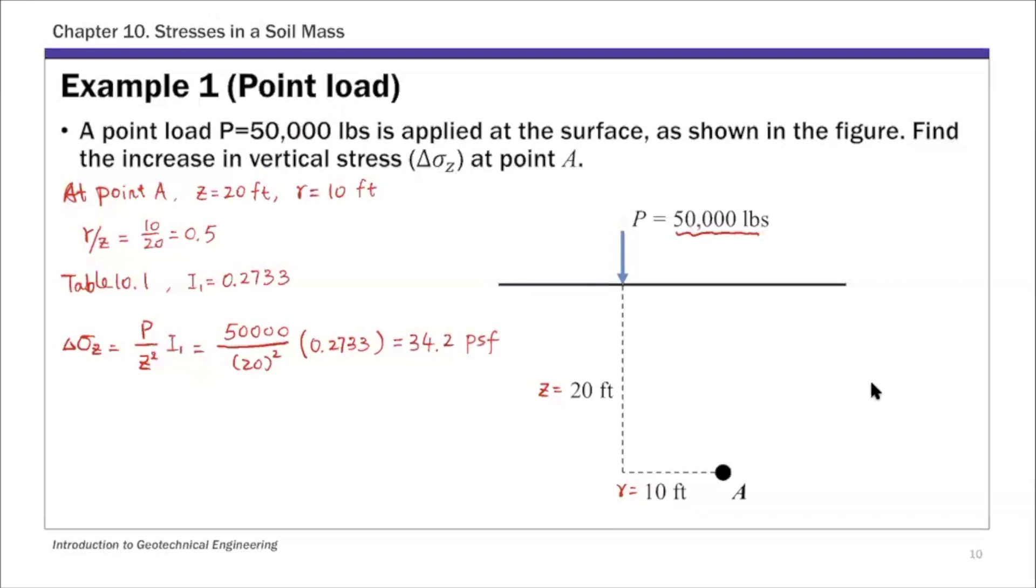So that's a really simple example. Given a point load at the surface and the location of the point in the soil, you use Boussinesq solution to figure out delta sigma Z, the vertical stress increase. That's the first example, point load.